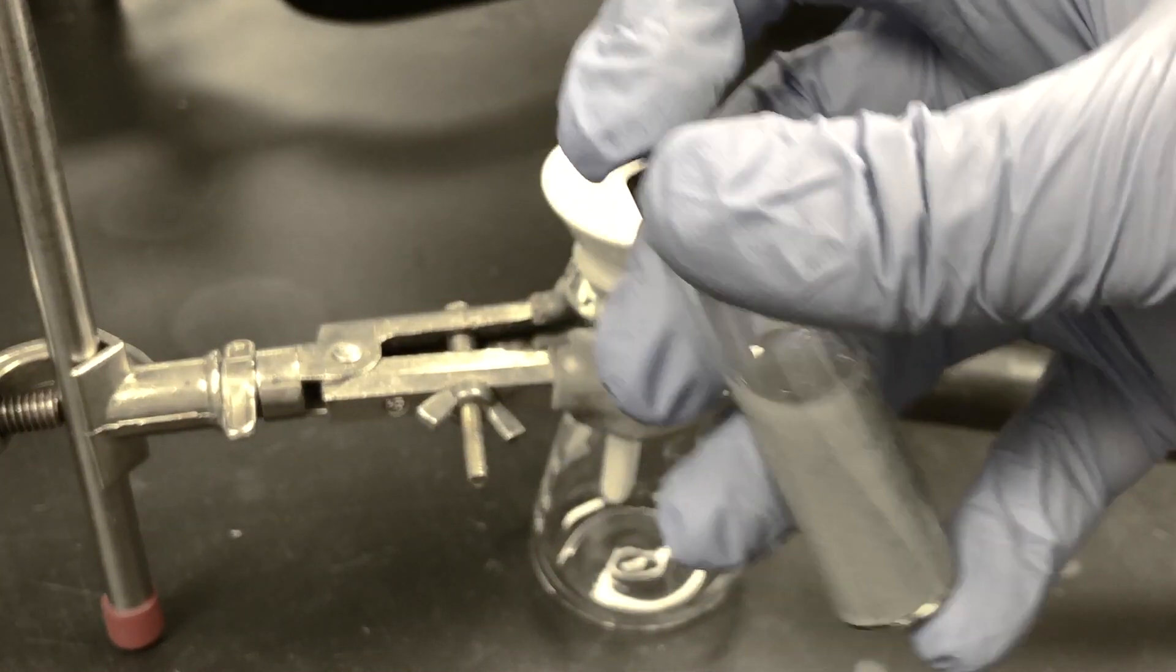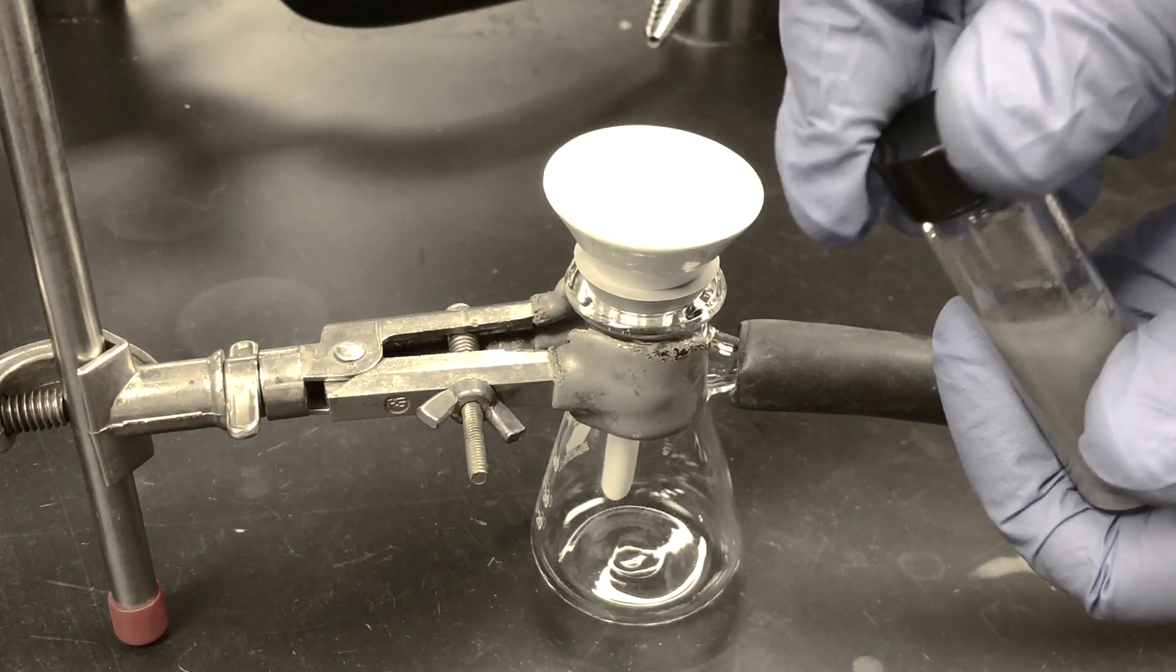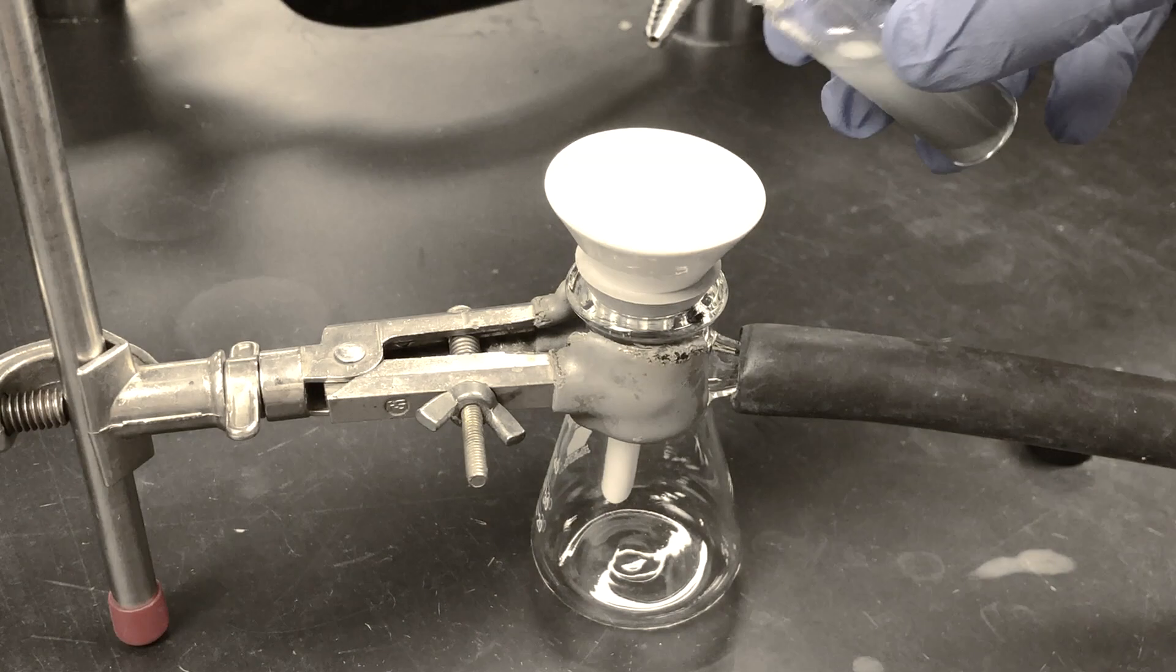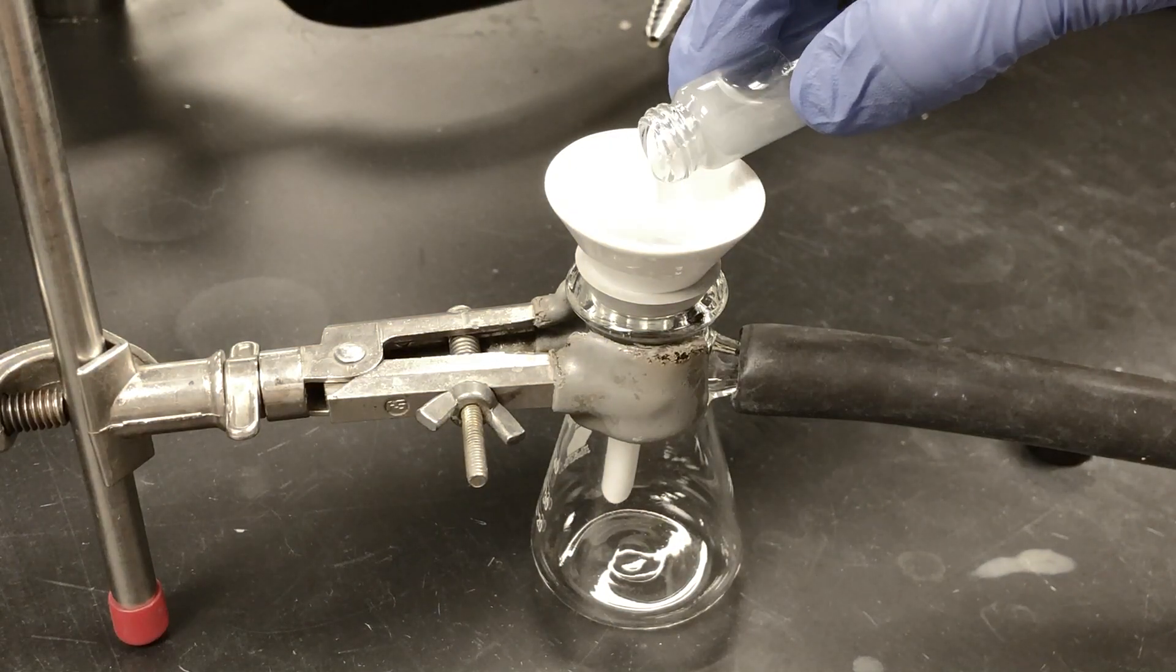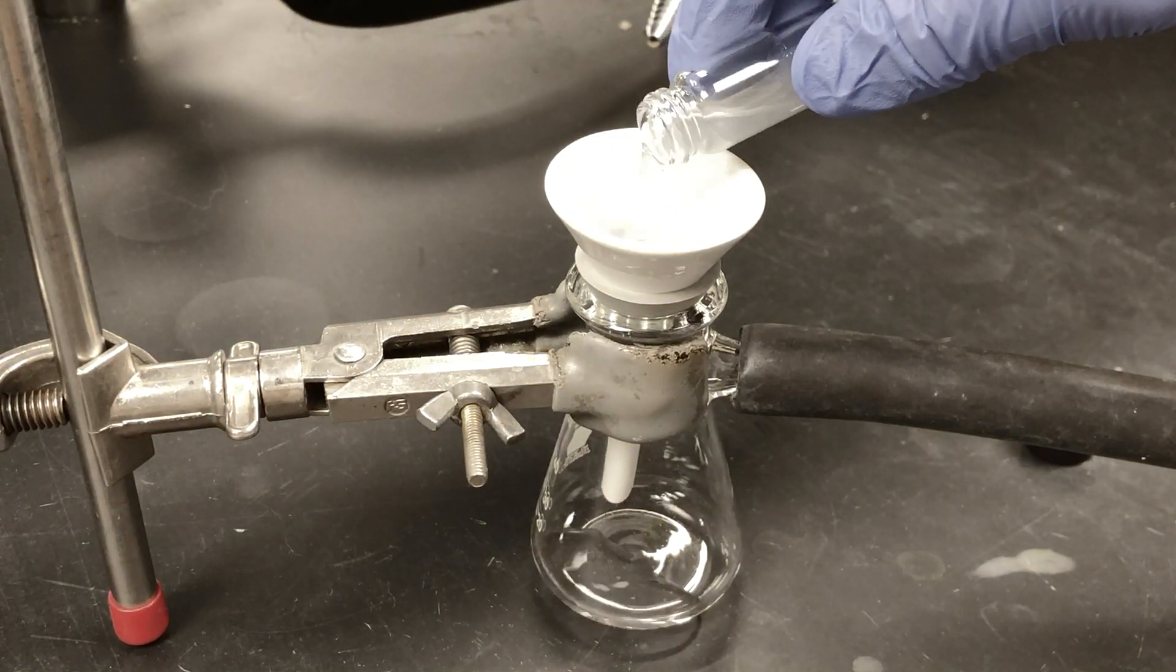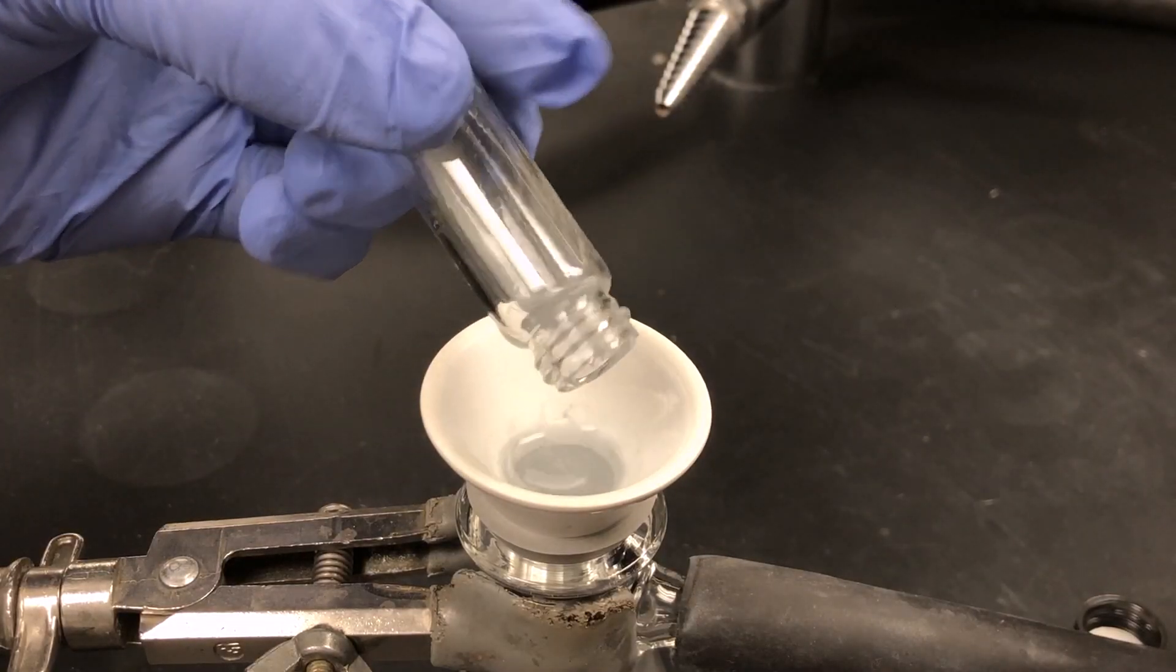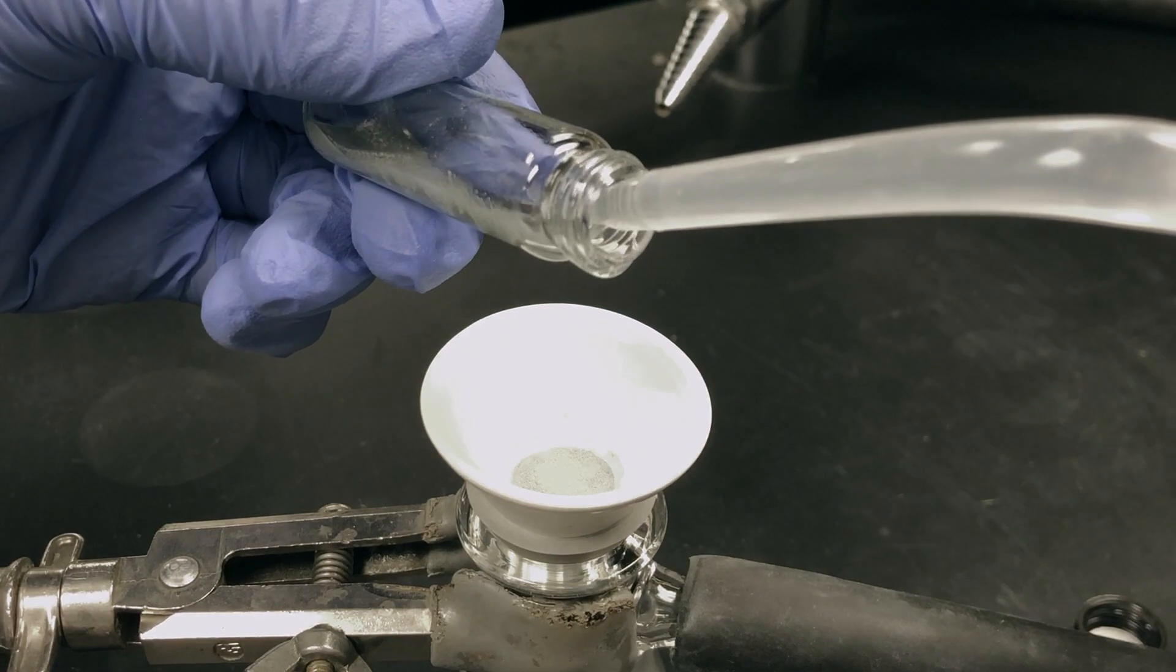Now you can start adding your solution. Shake your vial first, and then pour the contents onto the center of the filter paper. Try to get as much of your solid onto the filter paper as you can. You can rinse your container with your solvent a few times to remove any residual particles.